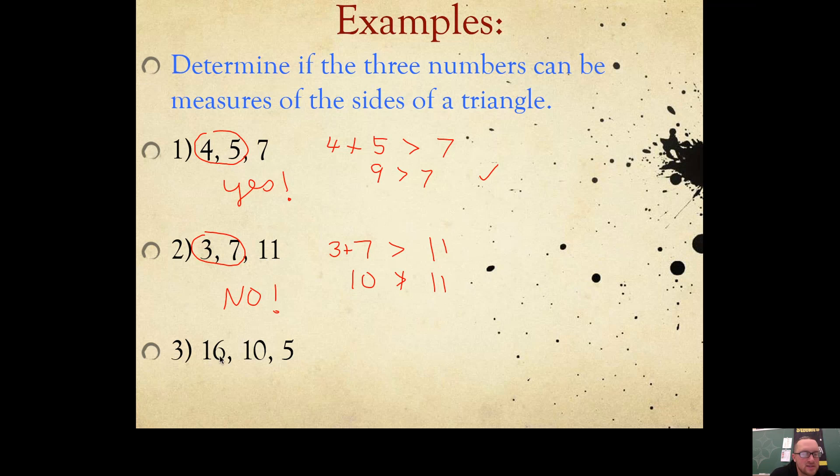Number 3. We have a side length of 16, 10, and 5. Be careful here. Your two smallest sides don't always have to be the first two. Add your two smallest sides. 5 and 10 together. Is that bigger than 16? Is 15 bigger than 16? It's not. You can't make a triangle with those side lengths.